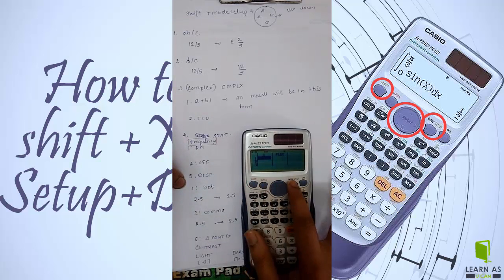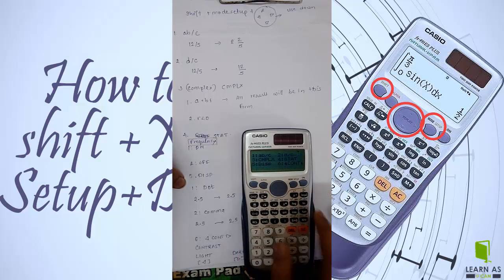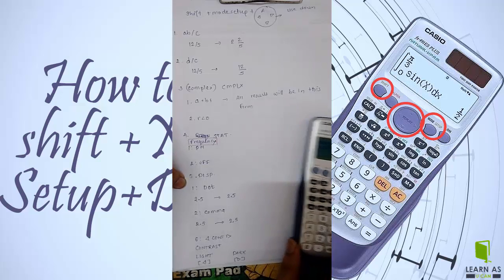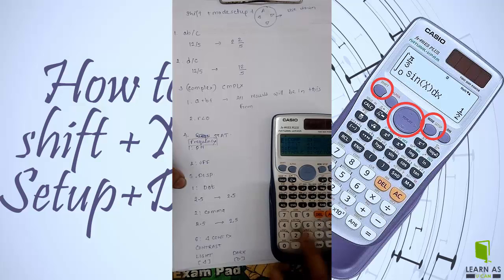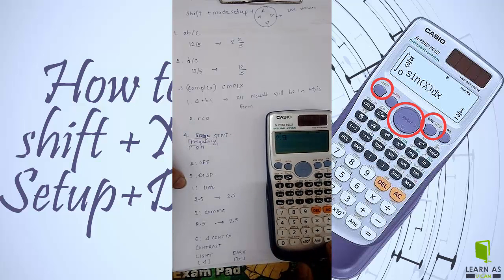The next mode setup is display, whether you want this result in dot form or comma form. You can see the result is now in dot form.